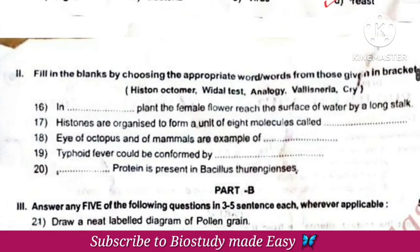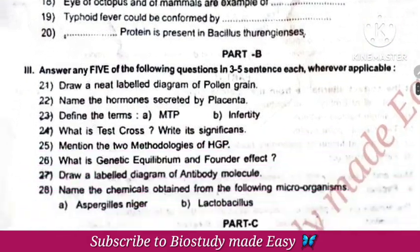Fill in the blanks section: Vallisneria plant has a female flower with a long stalk. Histones are organized to form a unit of 8 molecules called the histone octamer. Eyes of octopus and mammals are examples of analogous organs. Typhoid fever test is Widal test. The protein present in Bacillus thuringiensis is CRY.